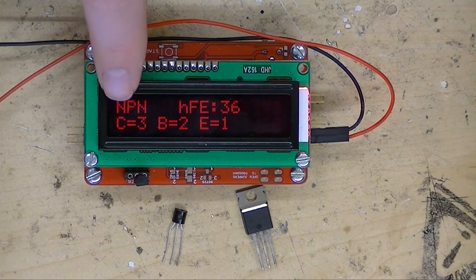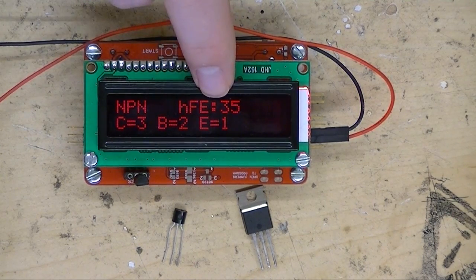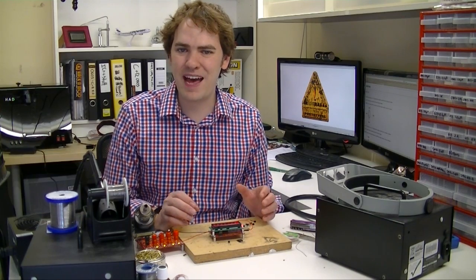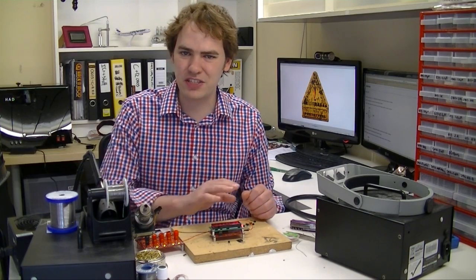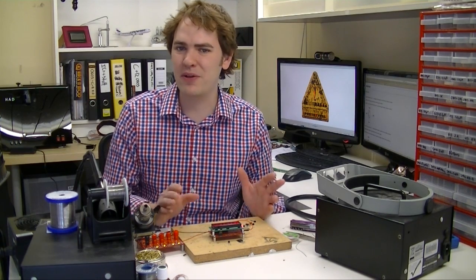It also shows the pinout. The collector is pin 3, the base is pin 2, and the emitter is pin 1. That'll save you a run for the datasheet when you're building a project and you're not sure which part's which. It also helps with reverse engineering and figuring out how something else is built.